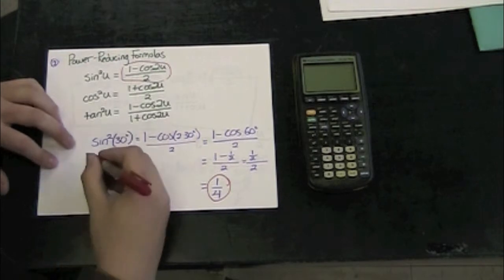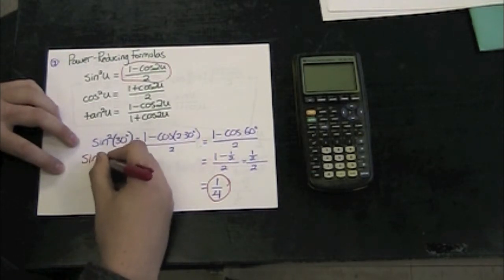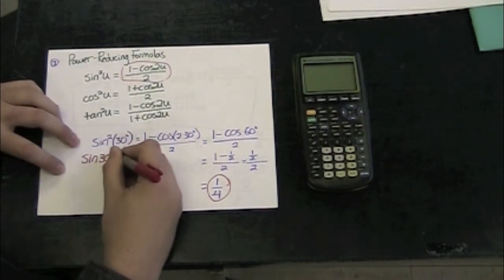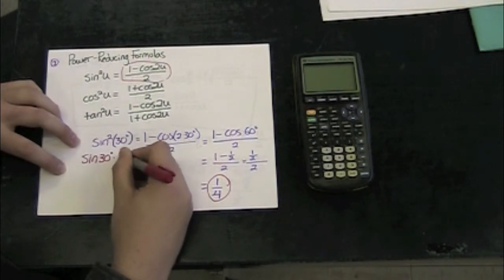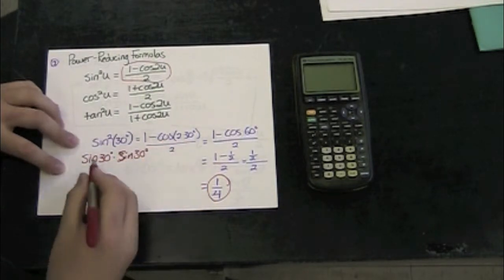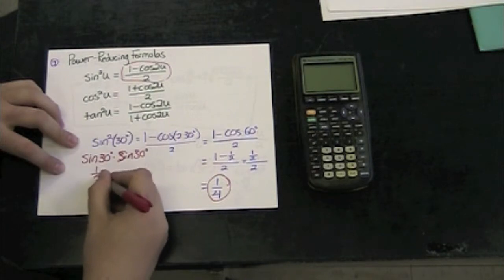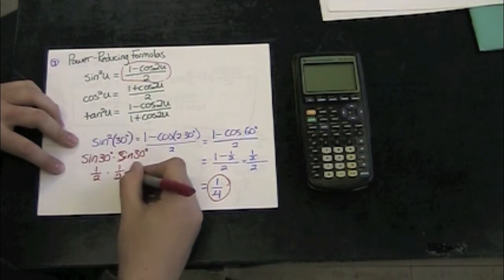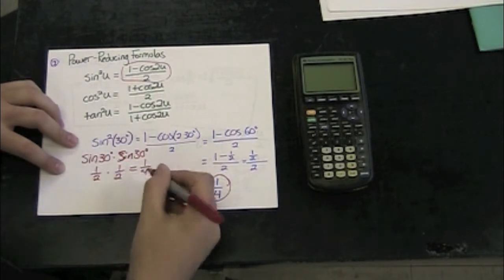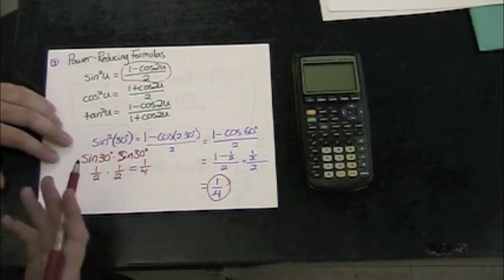And if we think about that, sine squared of 30 is really sine of 30 times the sine of 30. Sine of 30 is going to be a half. Half times a half also equals a quarter, so that makes sense to us.